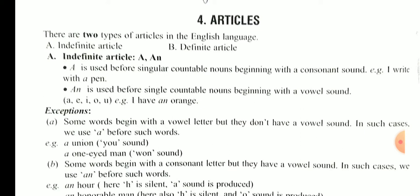Like, I write with a pen. अब pen क्या है? P क्या है? हमारा consonant है, क्योंकि ये vowel नहीं है। P alphabet जो है तो pen के साथ हमने 'a' use किया। इसी तरह next: I have an orange. Orange में O जो है, first alphabet जो है वो हमारा O है। It means वो vowel है, तो हमने उसके साथ 'an' लगाया।